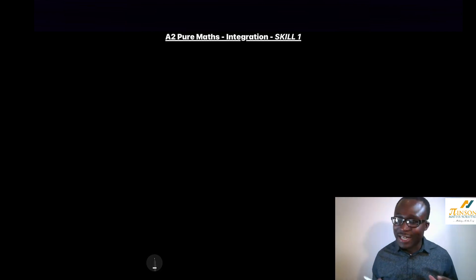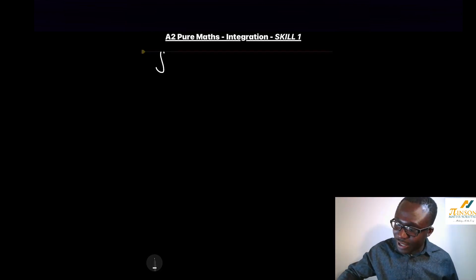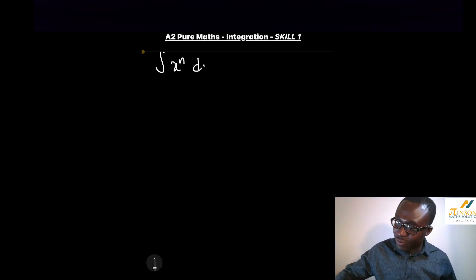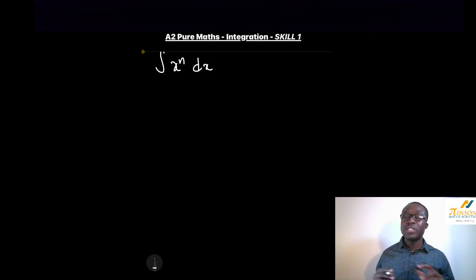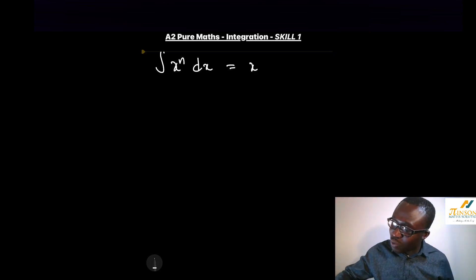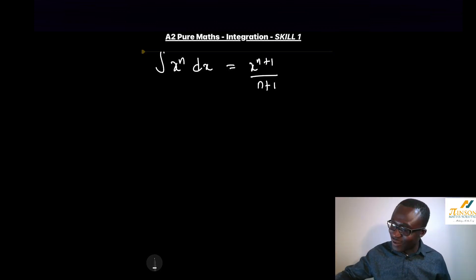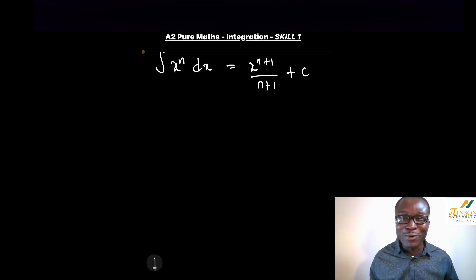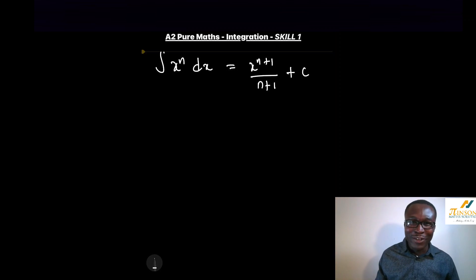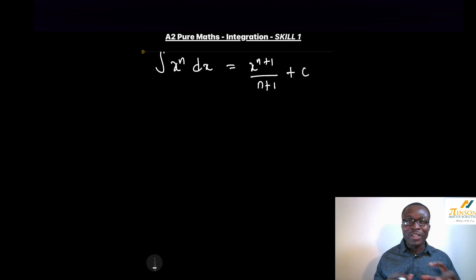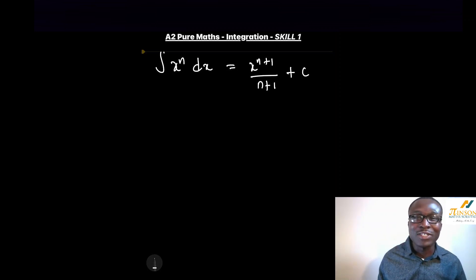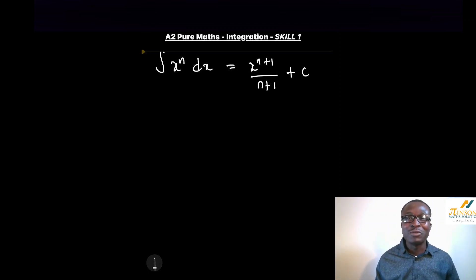Now, the standard rule is: if we integrate x to the power of n with respect to x, we add 1 to the power and divide by the new power. And of course, don't forget to add your C. I have a student in my class who will always tell me off for forgetting the add C. Because this is an indefinite integral, we don't know where it crosses the y-axis, so we have to include that constant.